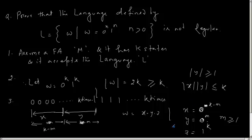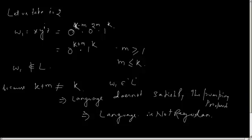The next step is to take a suitable value of i. We start with i equal to 2, giving new string w1 = 0 to the power k plus m, and 1 to the power k. The number of zeros is k plus m and number of ones is k. Since m is always greater than or equal to 1, k plus m cannot equal k, so w1 does not belong to L. This implies the language does not satisfy the pumping property and hence it is not regular.